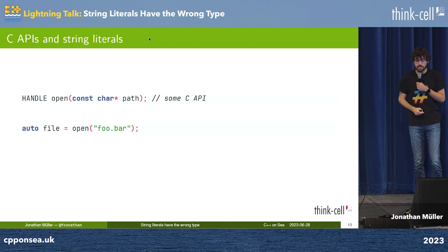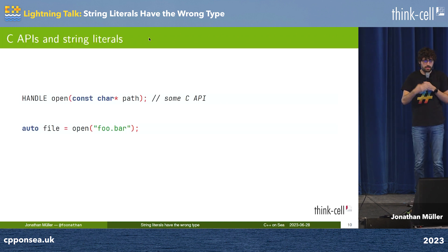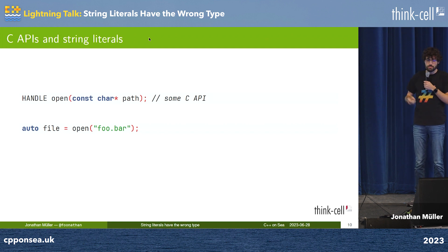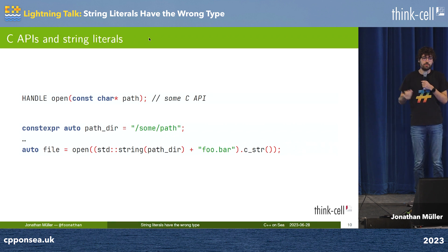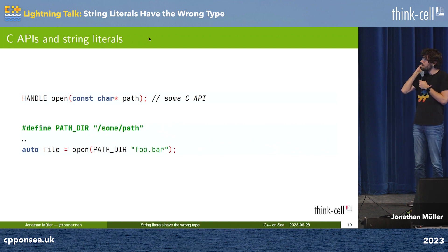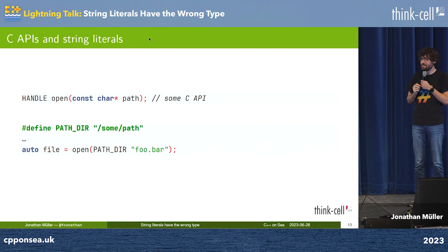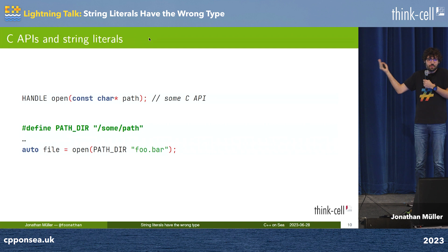But we can be even better. For example, when we want to call a C API that takes a C string, we just pass it a C string. But when we want to add some prefix — which is another compile-time constant — we have to use temporary allocation to get the C string, which is unfortunate. One fix is to have the preprocessor concatenate the strings; we use that a lot in the codebase, but what else are you supposed to do?